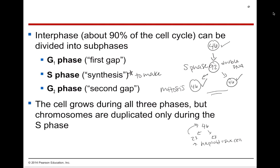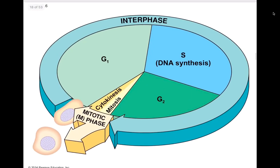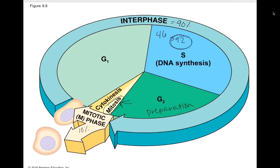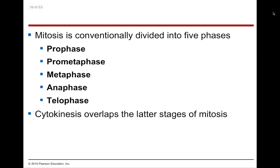Interphase is 90% of the cell's life cycle, with three parts: G1 (growth), S (DNA synthesis, where we go from 46 to 92 chromosomes), and G2 (a preparation step right before mitosis). G2 goes immediately into mitosis. Of course, mitosis is only about 10% of the cell's life. The 92 chromosomes we created during S phase mean that when we create those two cells at the end of mitosis, each one will have 46 chromosomes.